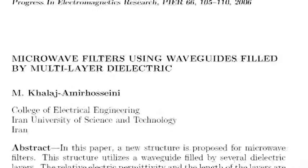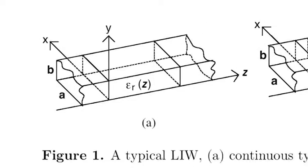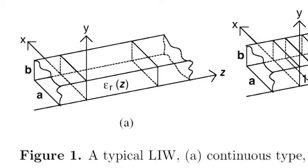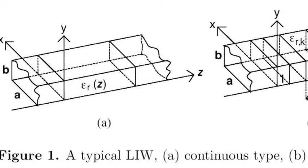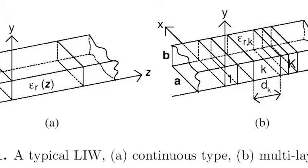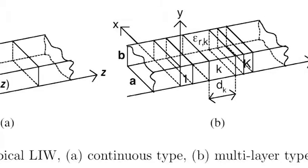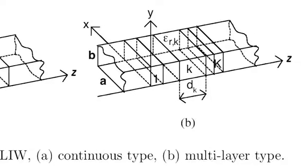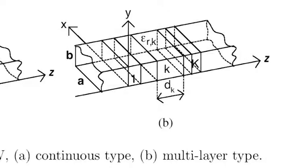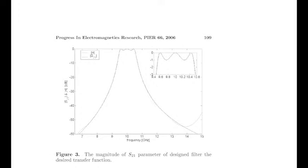The peer article we chose is 'Microwave Filters Using Waveguides Filled by Multi-Layered Dielectric.' In this article, a new structure is proposed for microwave filters. The proposed structure is a multi-layer longitudinal and homogeneous waveguide, or LIW. This structure utilizes a waveguide filled by several dielectric layers, whereby the electric permittivity and the length of the layers are optimally obtained through the least mean squared method. The multiple dielectric layers each have their own filtering capabilities, so when put together in the LIW, the filtering effects are superimposed, giving rise to a band pass filter. The purpose of this article is to demonstrate the usefulness of the proposed structure and how it is an improvement over current continuous LIWs.